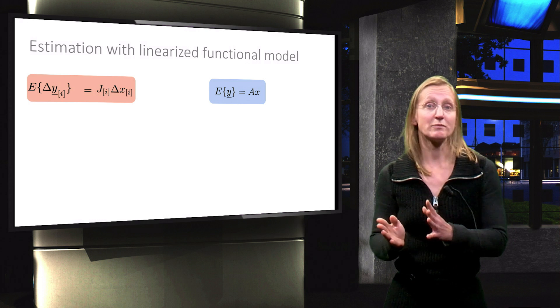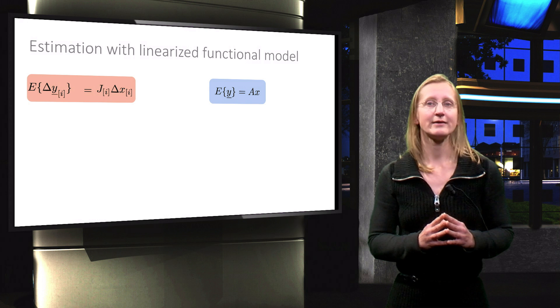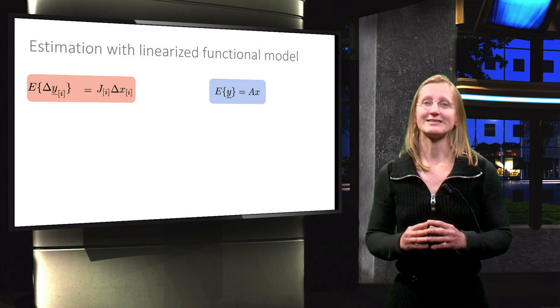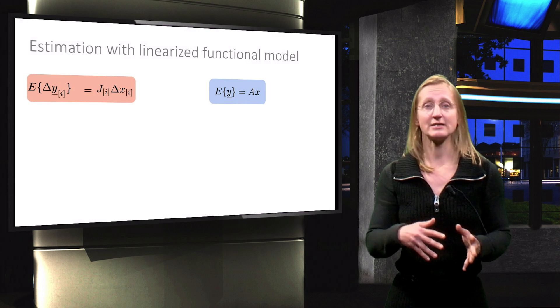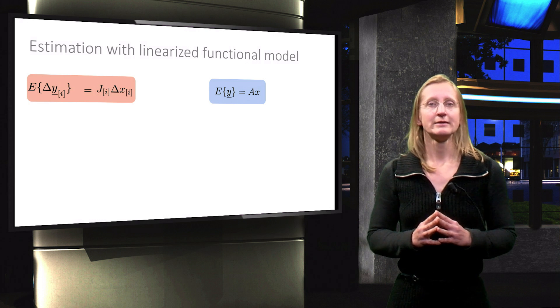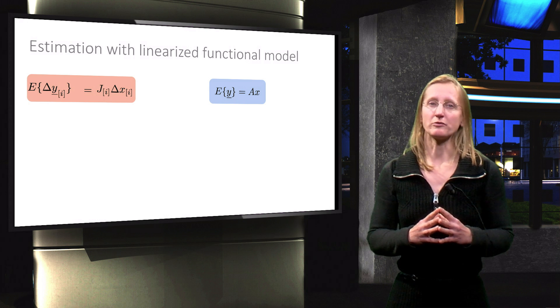Matrix A is replaced by the Jacobian at iteration i, and now we are estimating the delta x parameters from delta y, instead of x from y. The dispersion is the same in both cases.